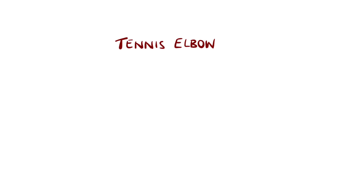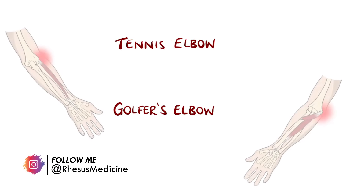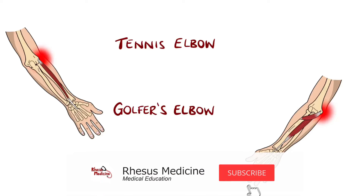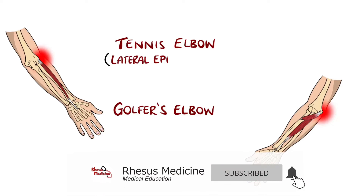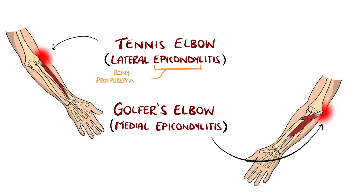Tennis elbow and golfer's elbow are two similar conditions causing pain in the elbow, medically known as lateral and medial epicondylitis, respectively. This means inflammation of the epicondyles, which are bony protuberances on the distal end of the humerus.